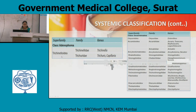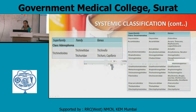Trichinella: the super family is Trichinelloidea, family is Trichinellidae, and genus is Trichinella. Family Trichuridae has genus Trichuris and Capillaria. Super family Trichinelloidea is under Class Secernatea.